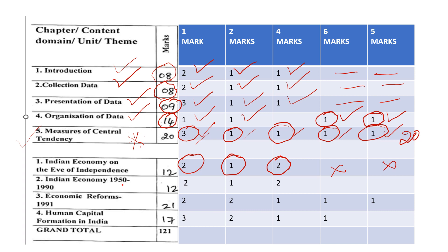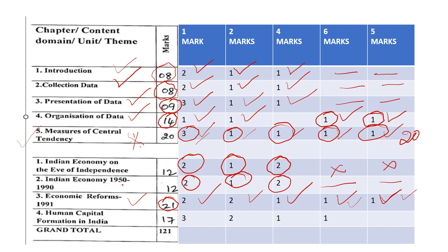Indian economy 1952–1990: you want to prepare 6 marks, 2 marks, and 4 marks. You want to prepare 6 marks and 6 marks. You want to prepare 6 marks and 2 marks. You want to prepare 6 marks. Economic reforms is the same thing — you want to prepare 6 marks. Six mark questions: you have three questions and one question prepared. That is the importance of economic reforms.